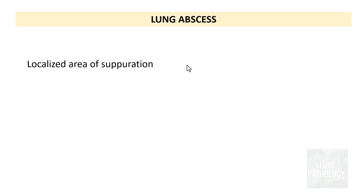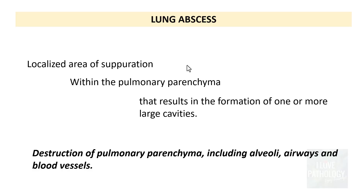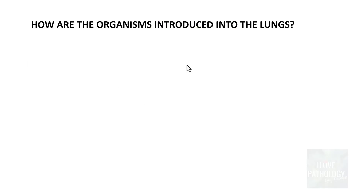So what is lung abscess? As the name says, this is a localized area of suppuration within the pulmonary parenchyma. It results in the formation of one or more large cavities. The most important thing to understand is that there is always destruction of pulmonary parenchyma, which includes alveoli, airways, as well as the blood vessels.